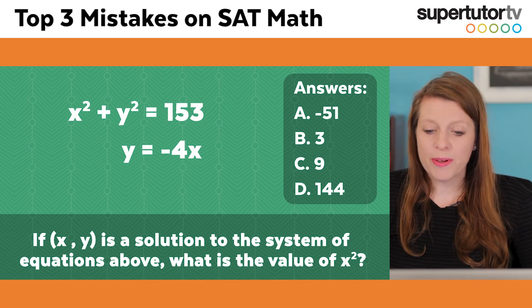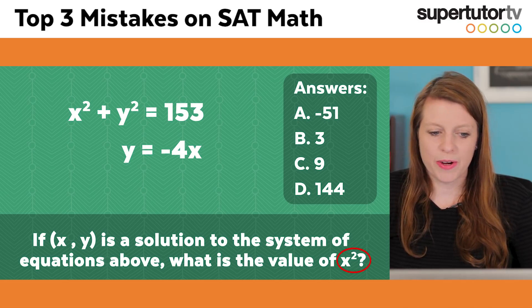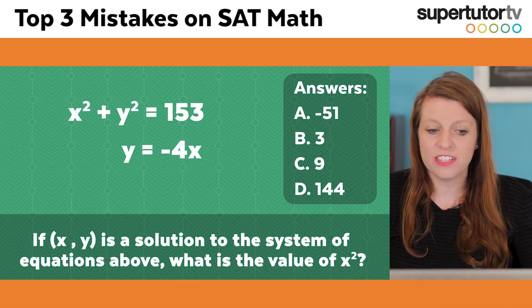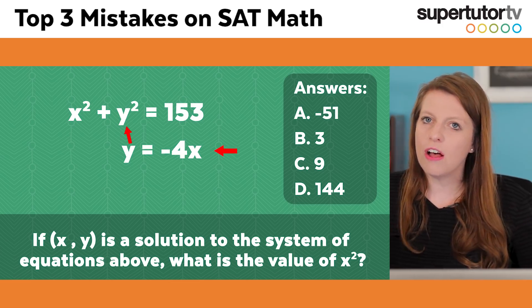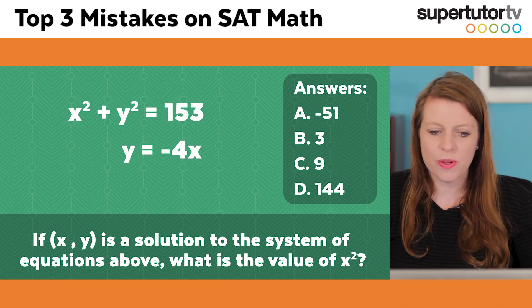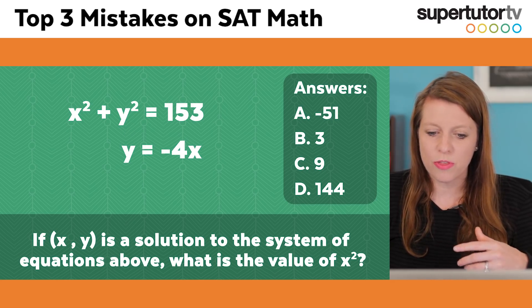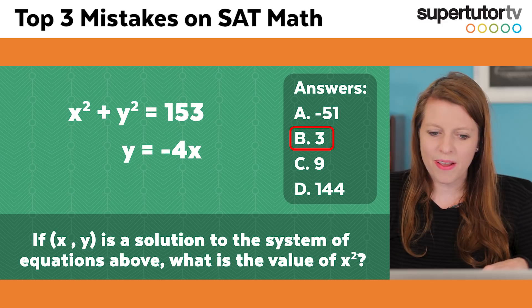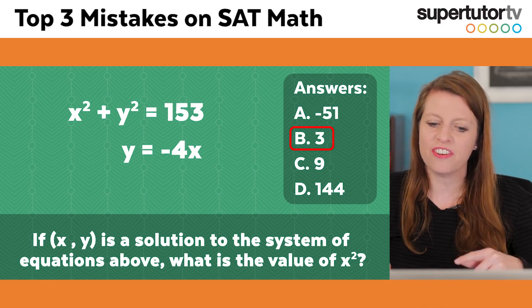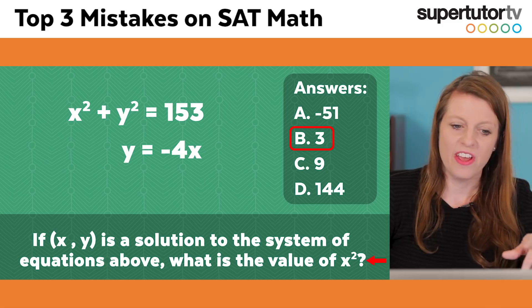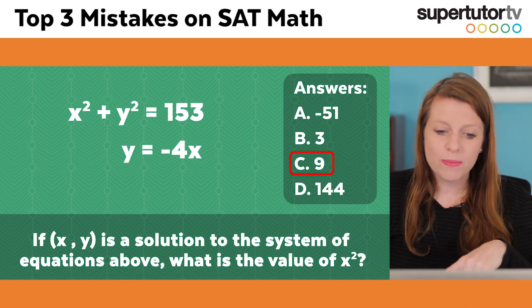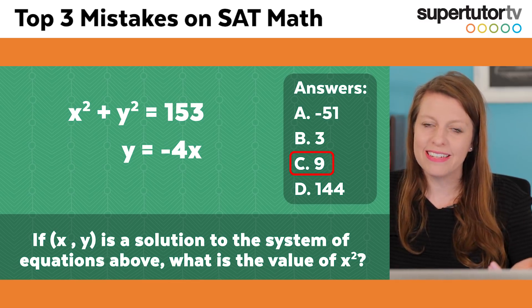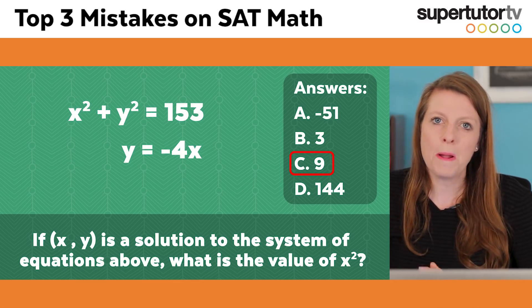My best advice is always double-check what's in front of that question mark. It would make sense to solve for x here — y is isolated, so it's easy to plug in, and you can solve down using algebra to get x equals three. But look at the question — it actually asks for x squared. So a lot of students will put three, but the answer is actually nine. Always make sure you know what's being asked.